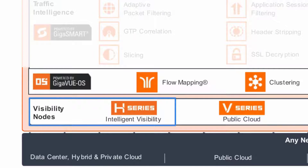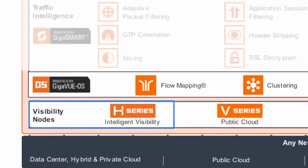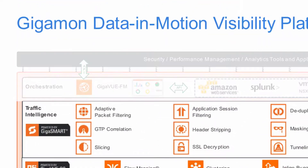The Gigaview OS drives fundamental fabric services such as flow mapping, clustering and inline bypass. Traffic intelligence is powered by Gigasmart technology, which provides stateful and packet level optimization and normalization functions.